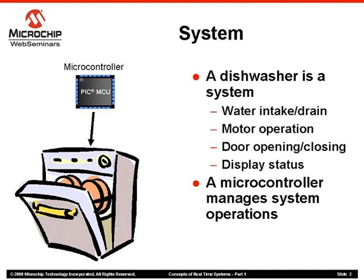So what is a system? A system is something that solves a problem. For example, to solve the problem of dirty dishes, we can design a system — a dishwasher.